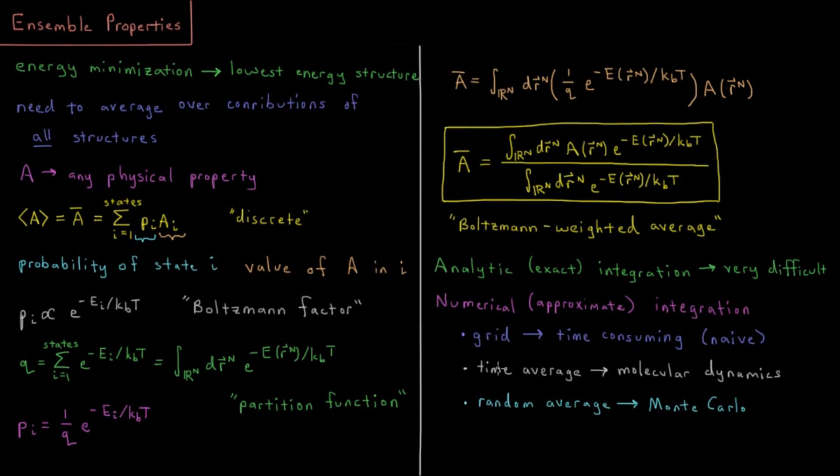Alternatively, we could use one of two strategies which is used all the time in computational chemistry. Number one would be what you call a time average, that'd be using what we call molecular dynamics.